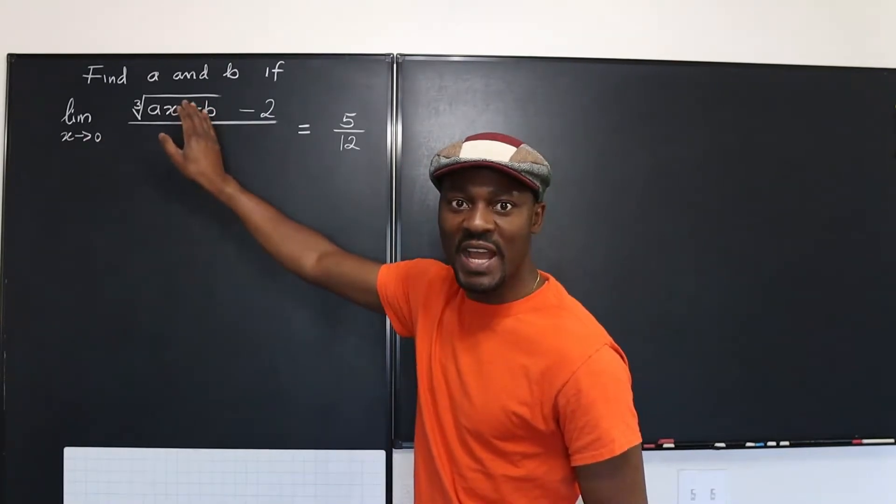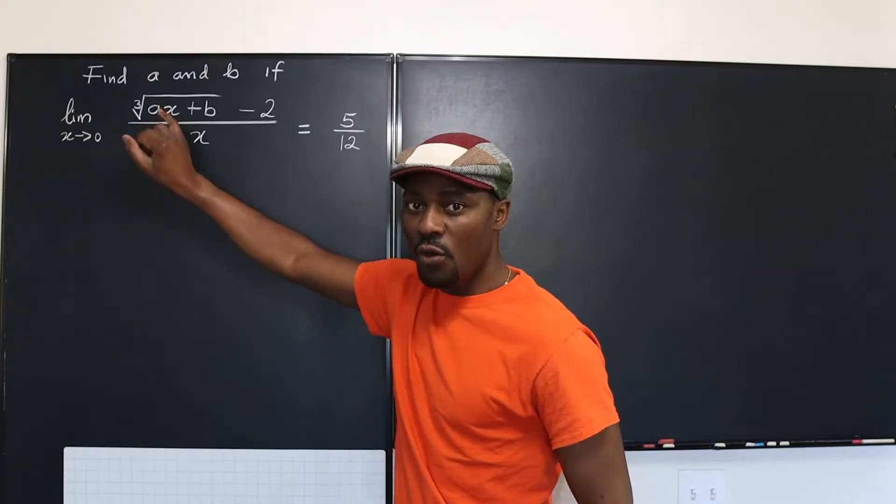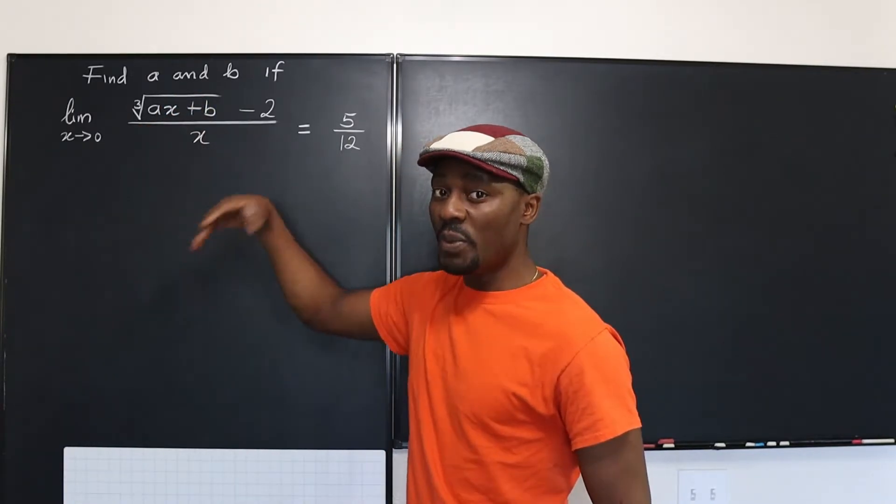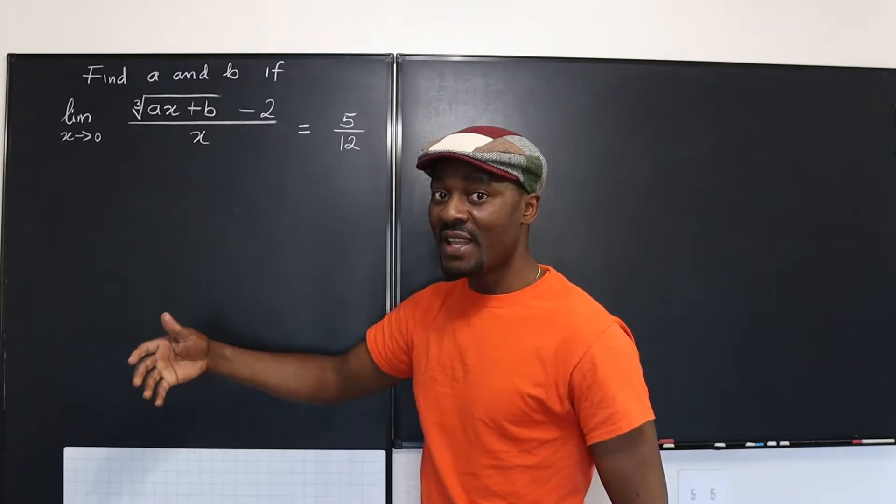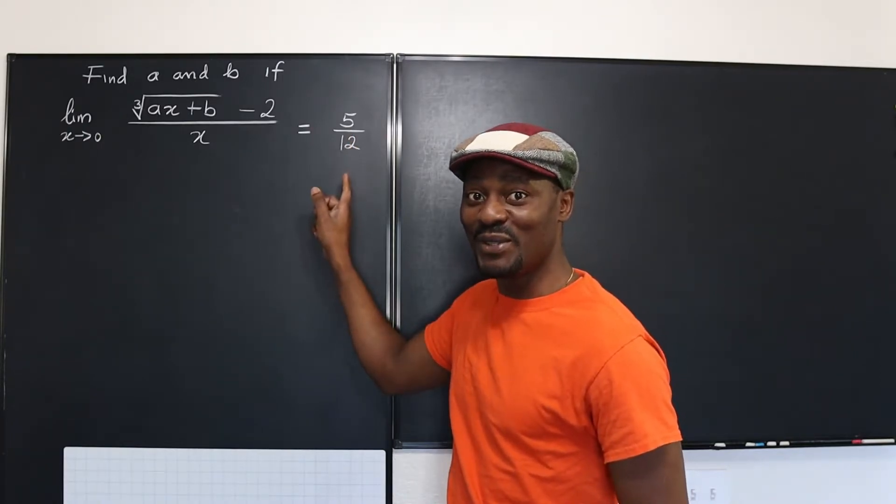But the way it is, you can't cancel any X out because the X here is trapped. So what if you're going to get zero over zero? Then L'Hopital's rule can apply. We know it has to apply because the limit exists. They already gave us the limit to be 5 over 12.